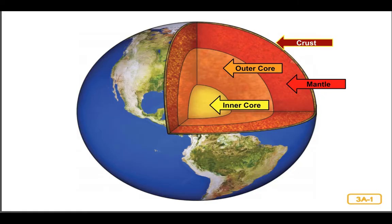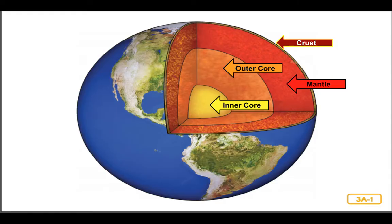Scientists believe that the very center of the Earth, the inner core, is actually hotter than the surface of the Sun, which is a blazing 10,000 degrees Fahrenheit. The inner core is much hotter than the outer core. It may seem strange, therefore, that the outer core of the Earth is molten metal, yet the inner core at the very center of the Earth, where it is the hottest, is a solid ball of metal — which, by the way, is just a bit smaller than the Moon.